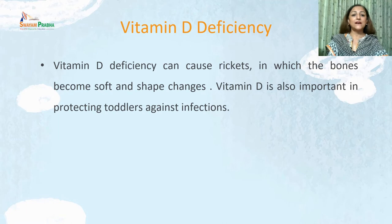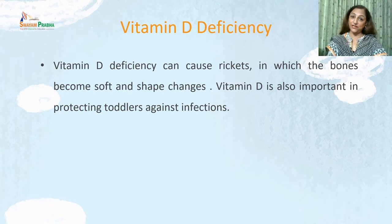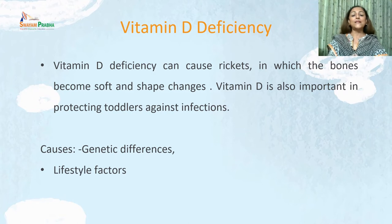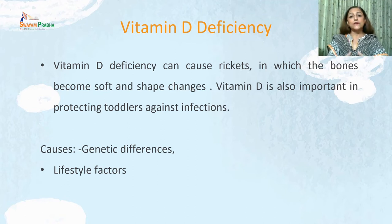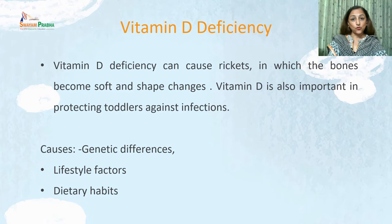Vitamin D is a fat-soluble vitamin essential for bone growth and health. Vitamin D deficiency can cause rickets, which causes bones to become softer and change shape. Vitamin D also protects toddlers against many infections. Reasons for deficiency include genetic differences, lifestyle factors such as less exposure to sunlight, covering the skin, using sunscreen, and dietary habits such as replacing fortified infant formula or milk with cow's milk as the main drink before the child is one year old.